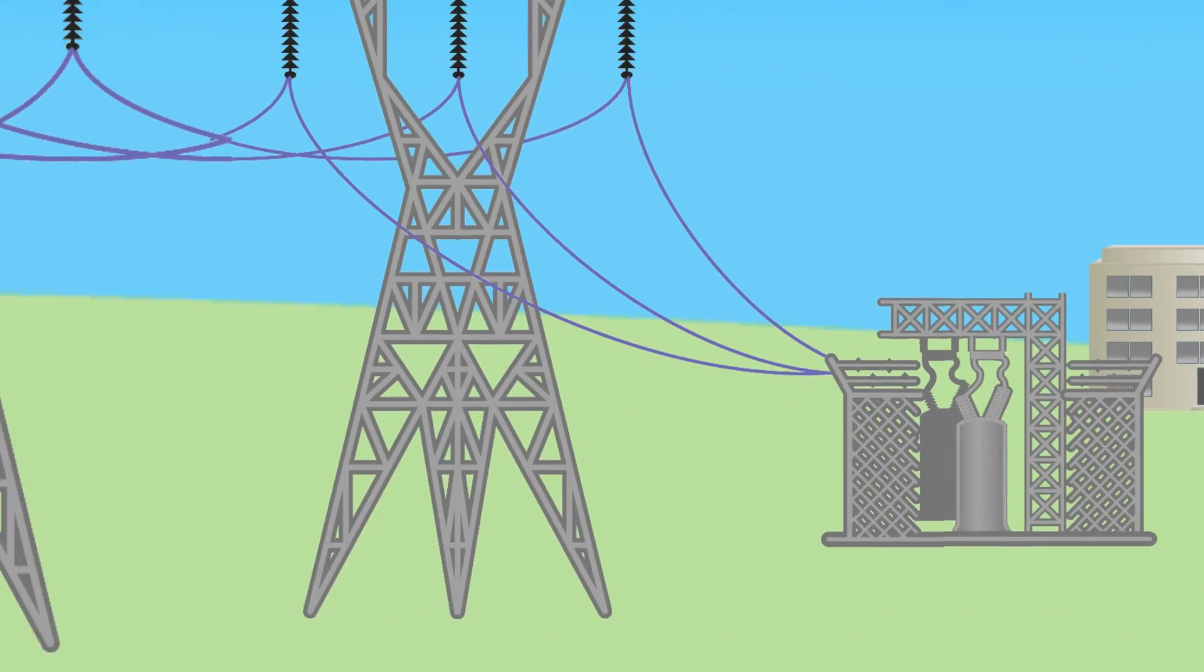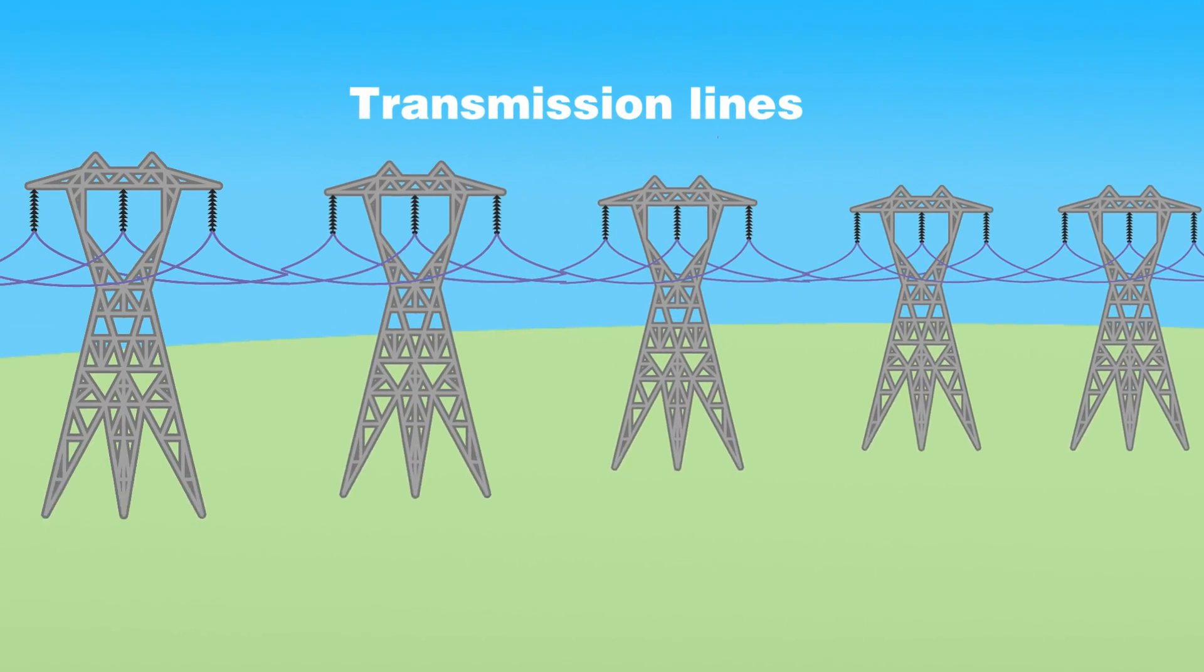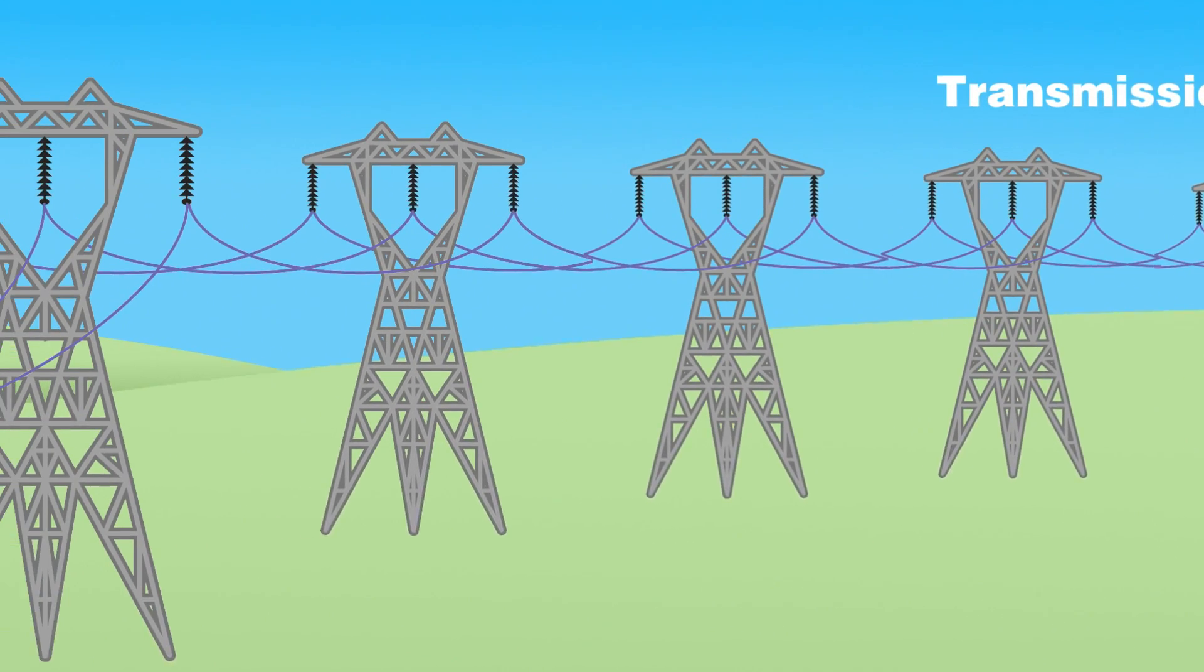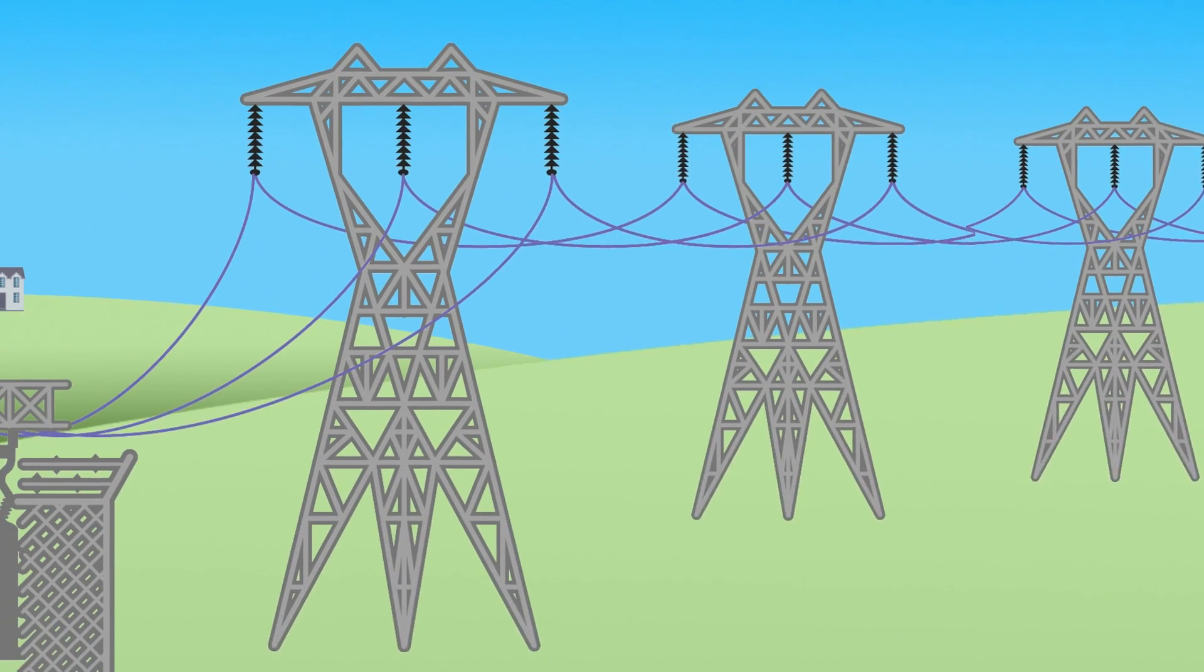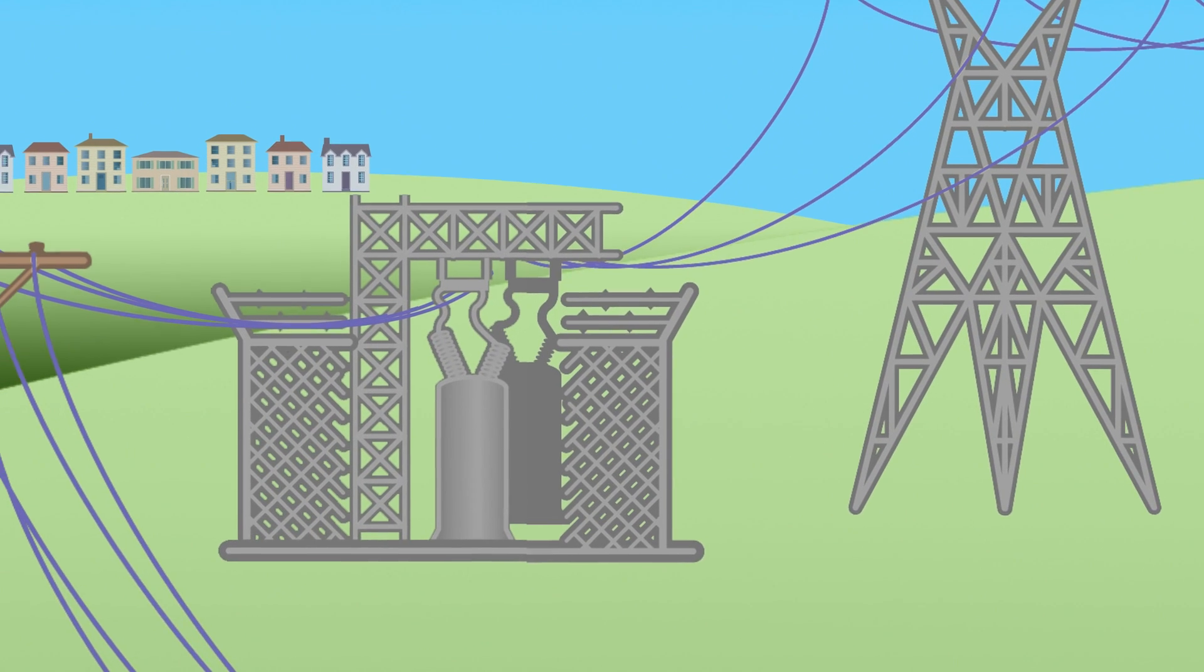There are two types of power lines. The first is called a transmission line, and that's what you see attached to tall towers near the roadside. Transmission lines carry high voltage electricity from the power plant to your community.